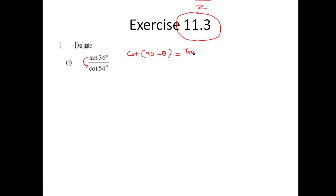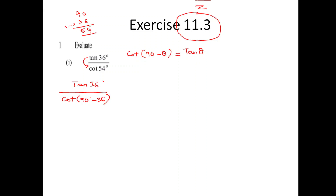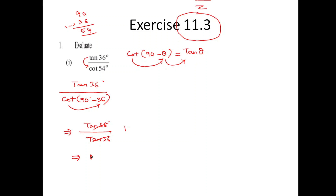Between the numerator and the denominator, I can write the denominator as 90 minus 36. When I am subtracting 36 out of 90, the result is 54. Now I am taking the other value. When I have taken the value of theta, the result is equal to tan theta. So similarly, I can write this as tan 36 by tan 36, and this divides out equally, so the overall result is 1.